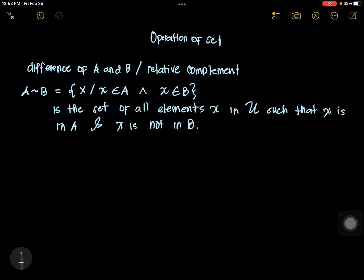Let's have an example to understand it better. So, we have the universal set. Let's define the universal set first. We have A, B, C, D, E.